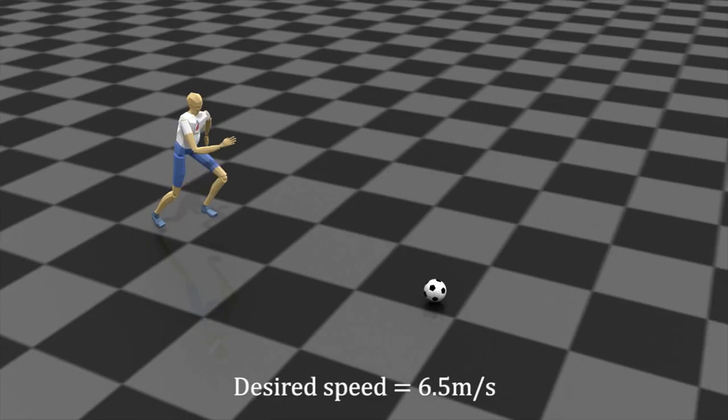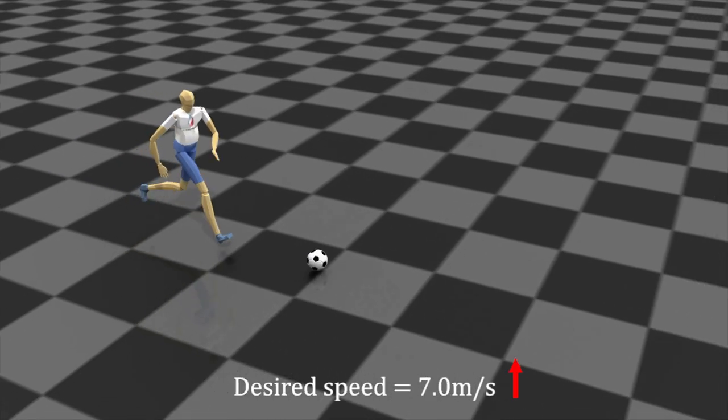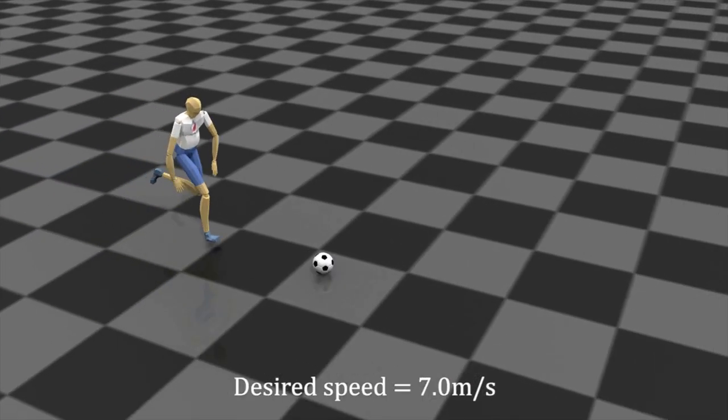Dribbling forward at different running speeds. A user can give the desired running speed online. According to the given speed, the character adjusts its dribbling speed and ball distance.